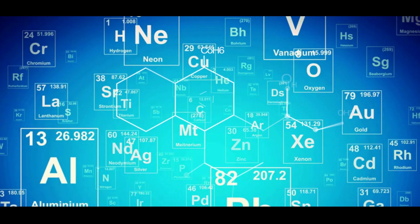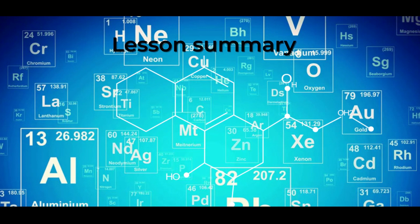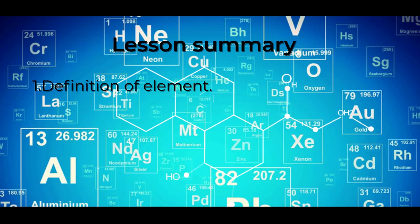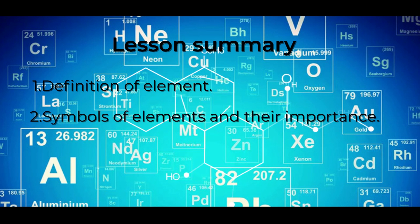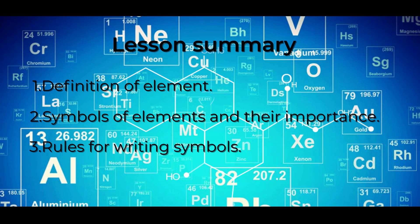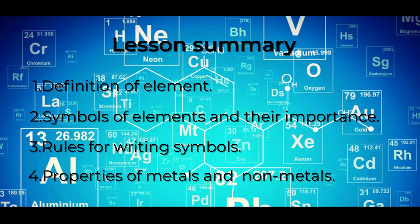Now that we have come to the end of our lesson, it is important for us to look back and find out what we have learned. Number one, we have learned the definition of elements. We have also learned the symbols of elements and their importance. Together with that, we learned the rules of writing symbols. And finally, the properties of metals and non-metals.